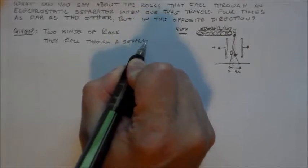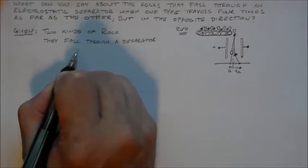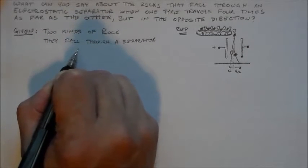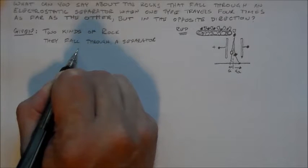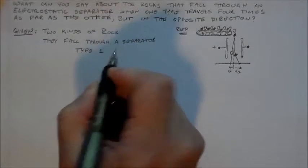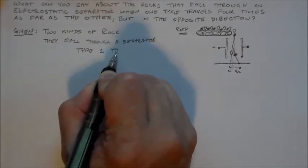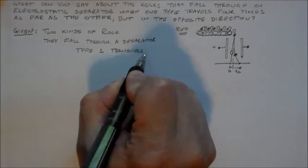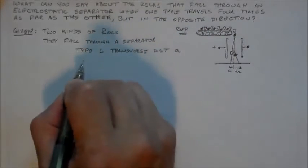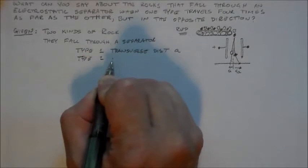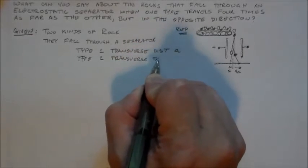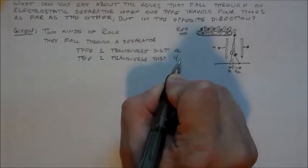You don't know anything about them except that they fall through an electrostatic separator. And so type 1 is going to go, it's going to fall distance A. So it's a transverse distance of A. And type 2, it has a transverse distance of 4A.